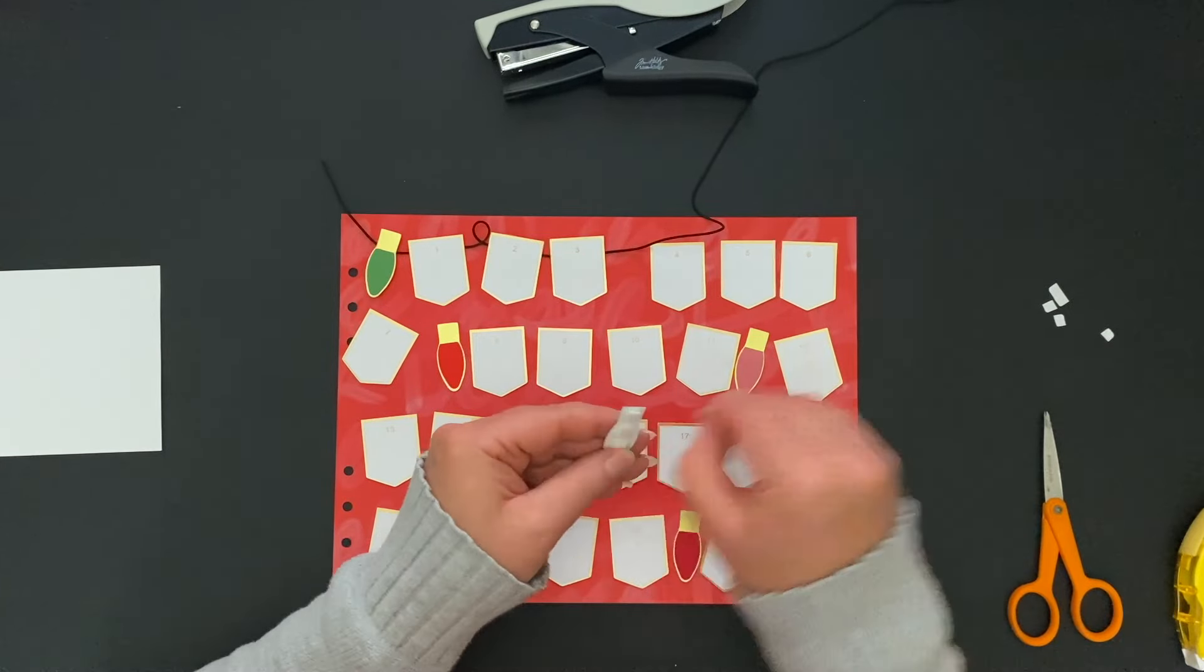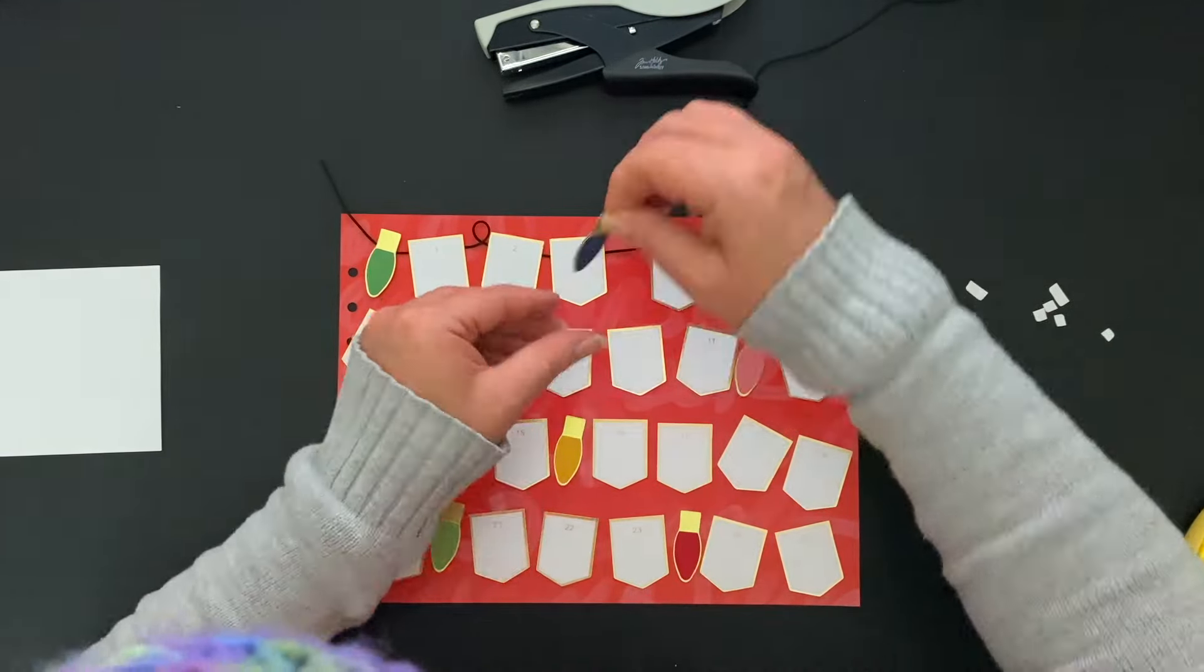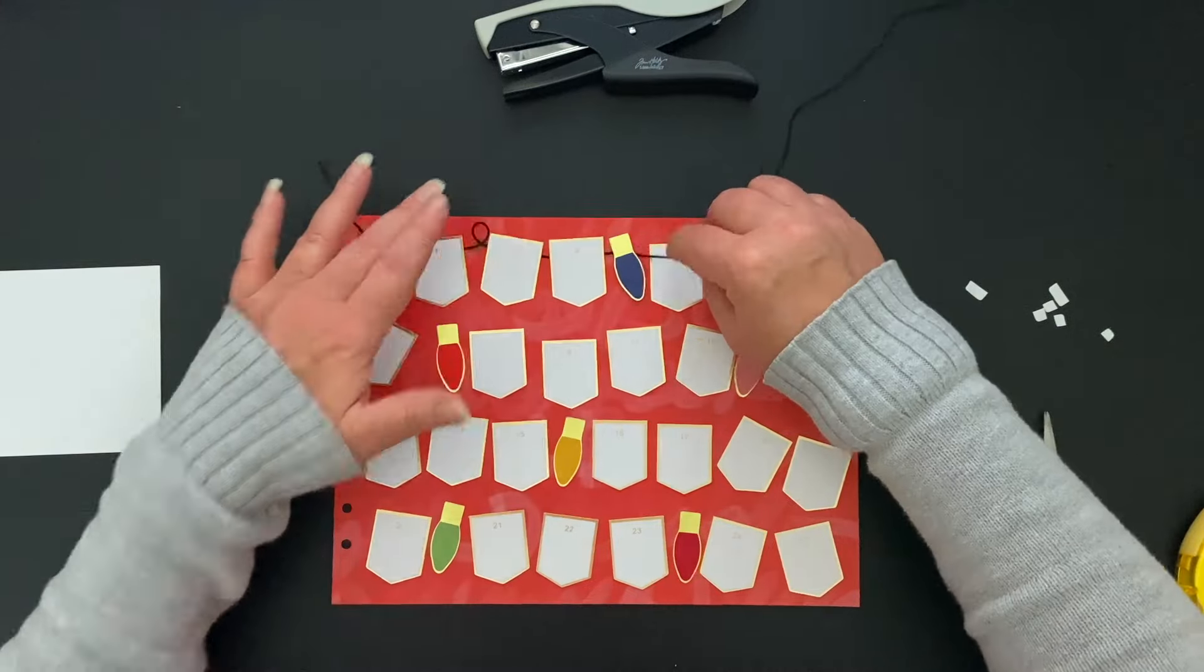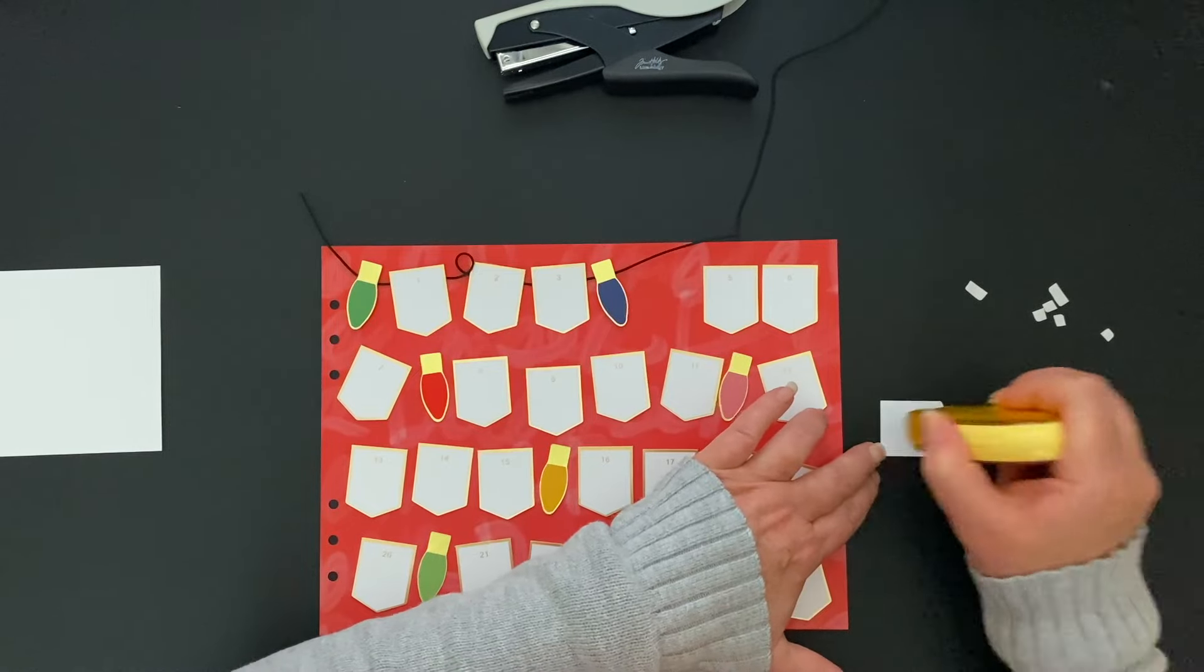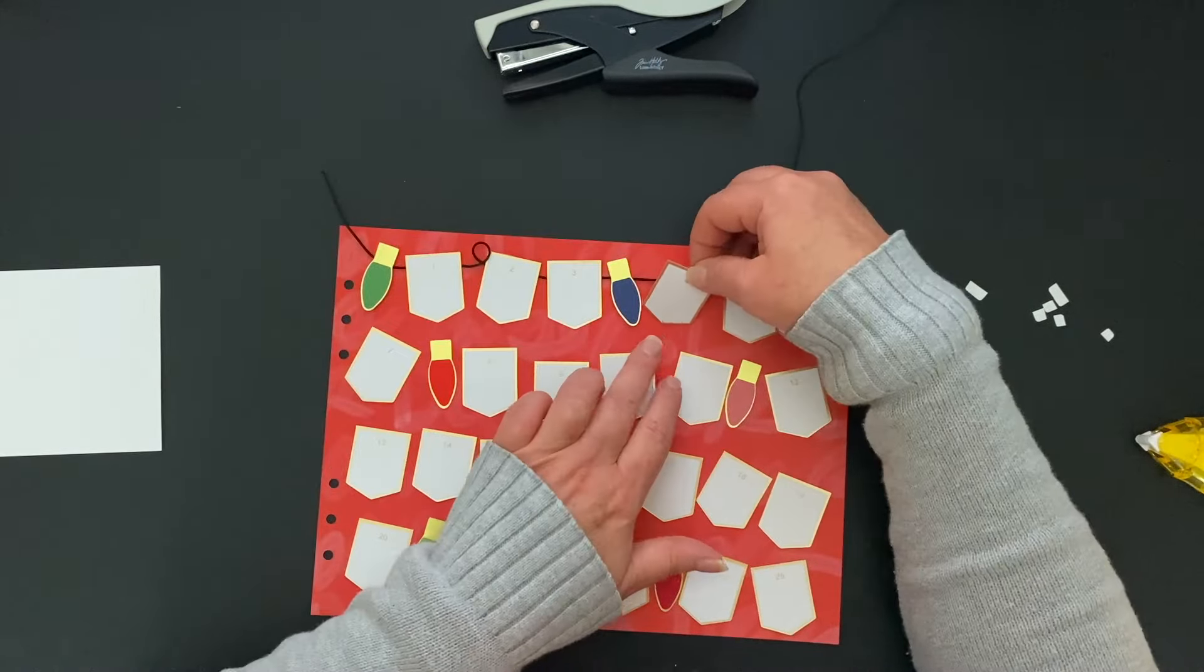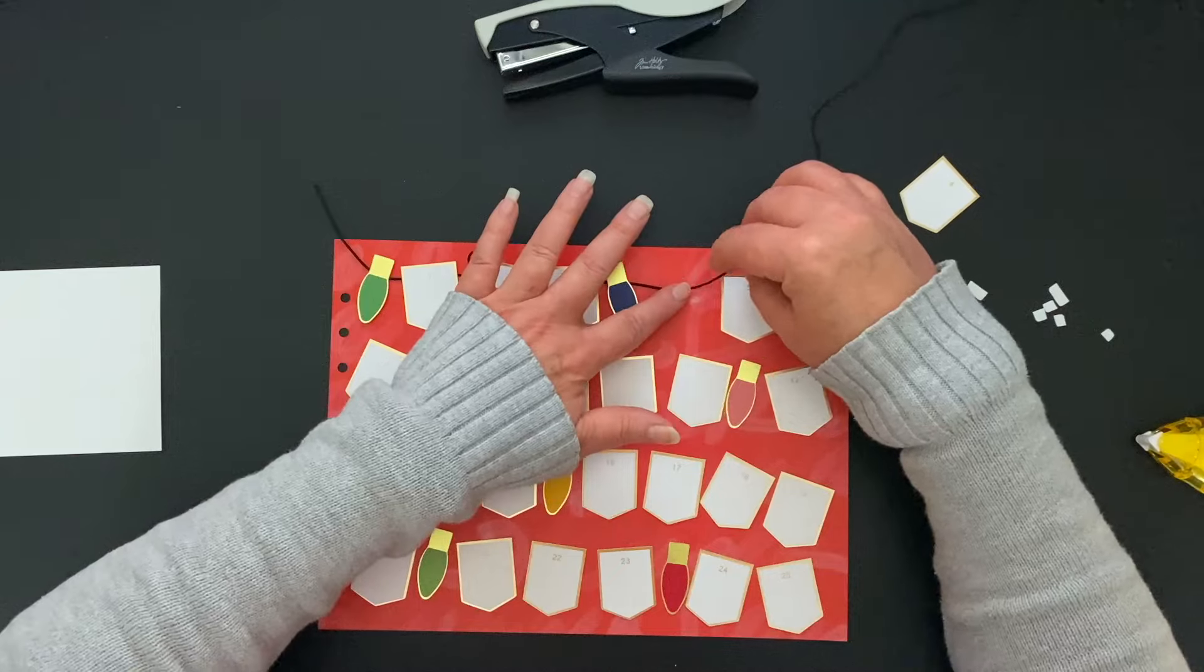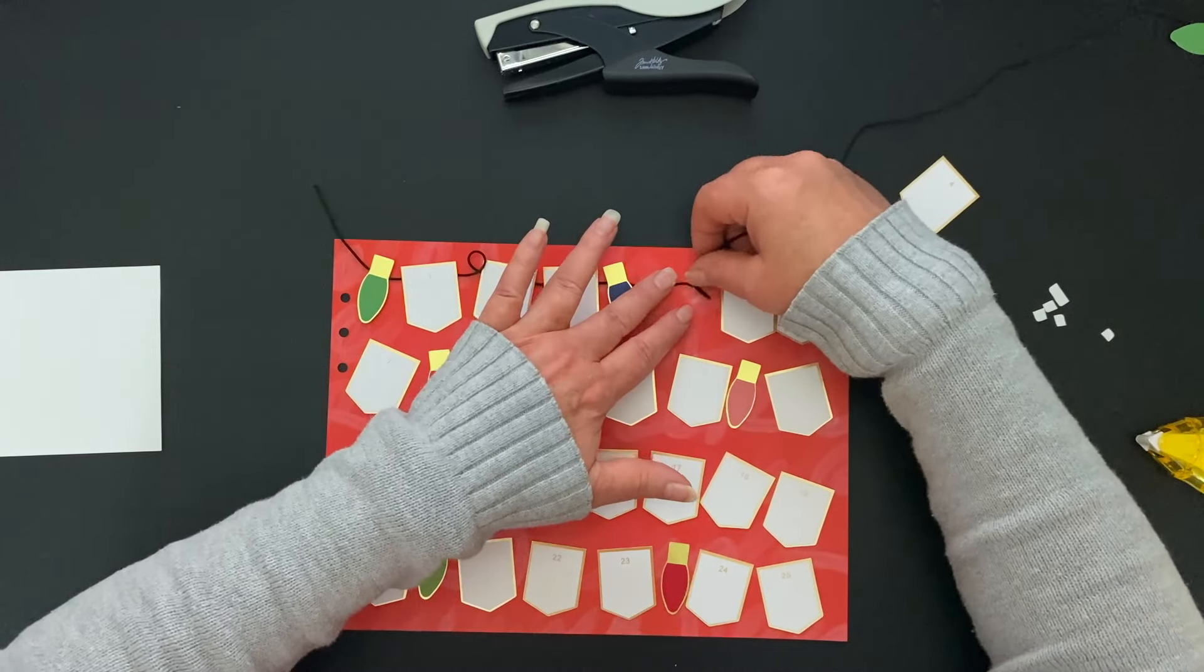I use my paper piercer to push the score tape so that it can only be underneath the cord. The thicker cord you use, the easier it's going to be to hide that little piece of score tape.